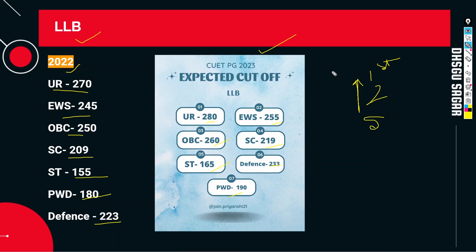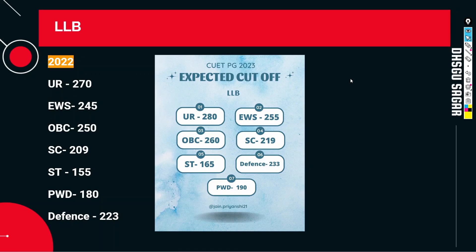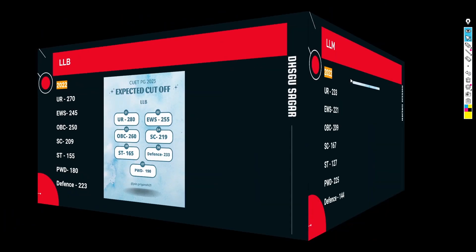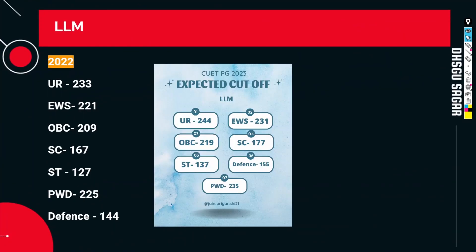Now, what we expect this year — the competition is high so the cutoff is not going down. Expected cutoff: UR 280, EWS 255, OBC 260, SC 219, ST 165, Defense 233, and PWD 190. This is a very great competition for LLB.